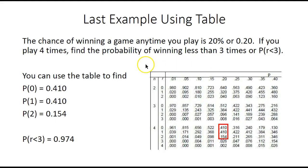In the last example, N is 4 and P is 0.2. But we want R less than 3.